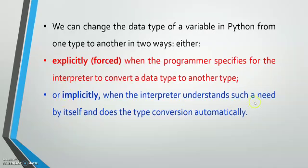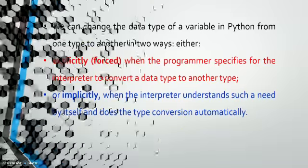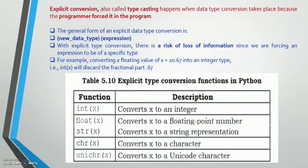The second is implicitly — when the interpreter understands the need by itself and does the type conversion automatically. In implicit conversion, when the Python interpreter starts running the code, it checks the code, sees that something needs to be converted, and automatically converts it. The programmer does not do it; the Python interpreter does. So the two types are explicit, which is forced, and implicit, which is automatic.